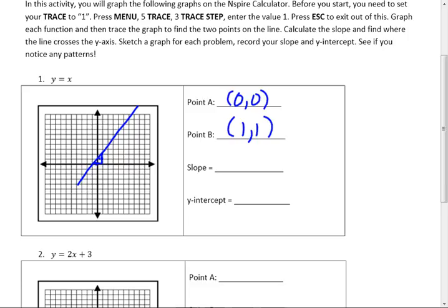It's 1. You went over 1, up 1. Could you use the slope formula to do that? Yes, you could. The y-intercept is where this line crosses the y-axis. My graph's off a little bit because the board was off, but that's at 0, 0. There's a connection between these numbers and the equation of that line.